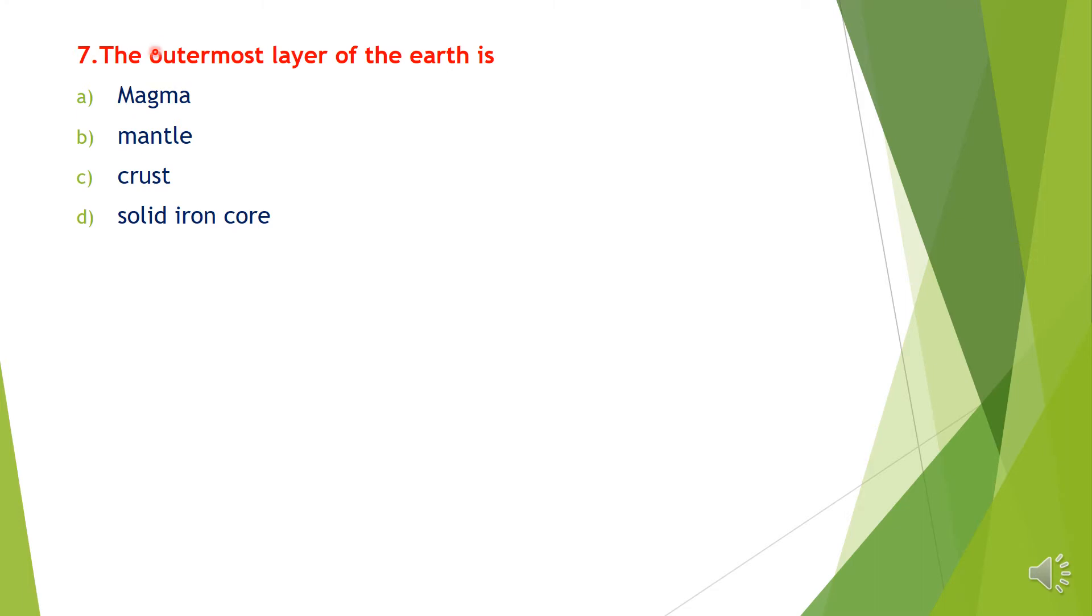Question 7. The outermost layer of earth is: A. Magma, B. Mantle, C. Crust, D. Solid iron core. Answer: Option C, Crust.